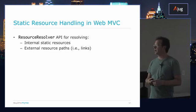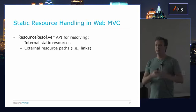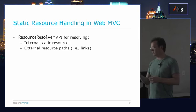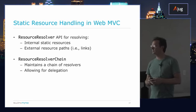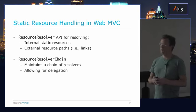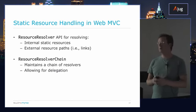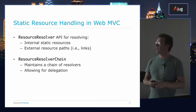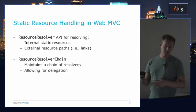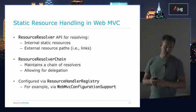You can also resolve the external resource path, so you can tell the external user how to reference this via an HTTP link to get a hold of this resource. And internally, if you've ever used filters — a servlet filter and the filter chain — this is analogous to that. There's a resource resolver chain that manages several resolvers and allows for delegation from one resolver to the next.